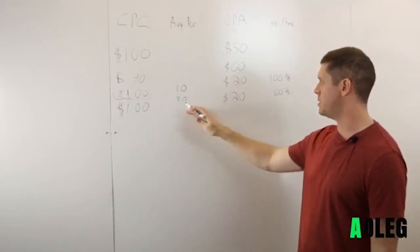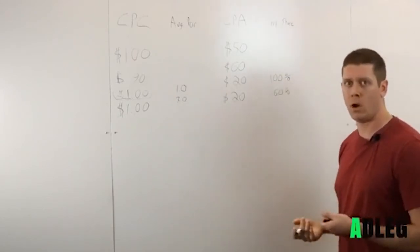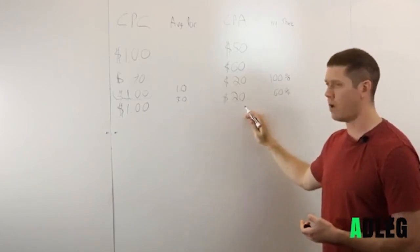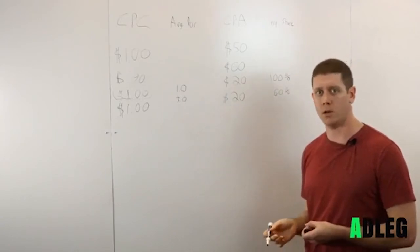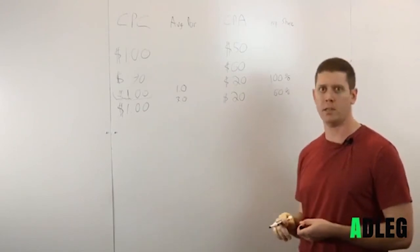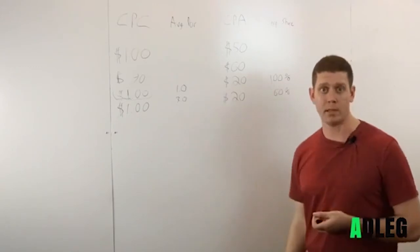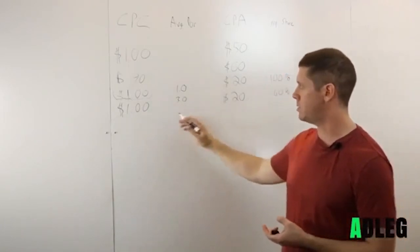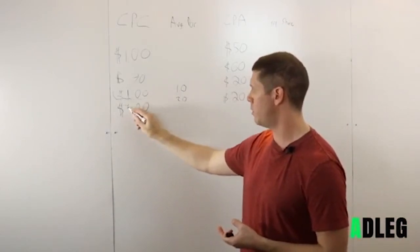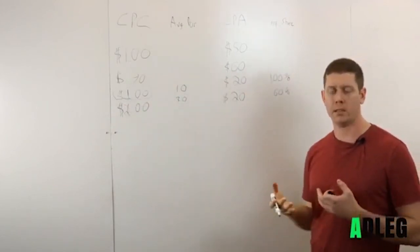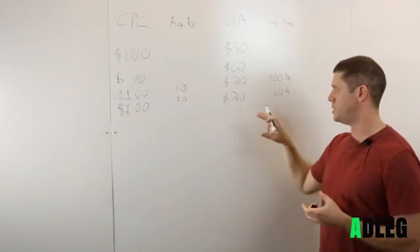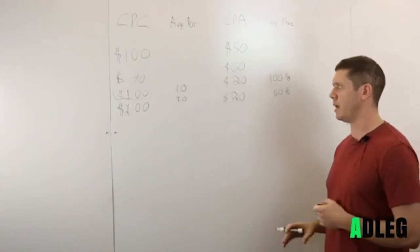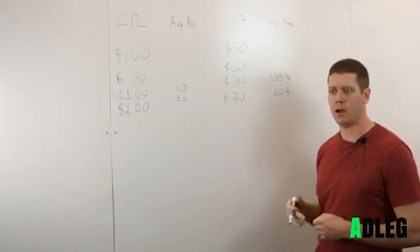Now this one, our average position is 3, impression share is 60%. So we're not being shown all the time. When we are being shown, we're in the third position on average. And this is converting very well, very far below our goal of $50 per conversion. So in this case we can definitely adjust the bid. And depending on how aggressive you want to be, you might try doubling it, tripling it. See what happens, because there's a lot of room here to play with. So you might start with doubling it up to $2 and seeing what that does to your average position and impression share, and then making sure your cost per conversion is still where you want it to be.